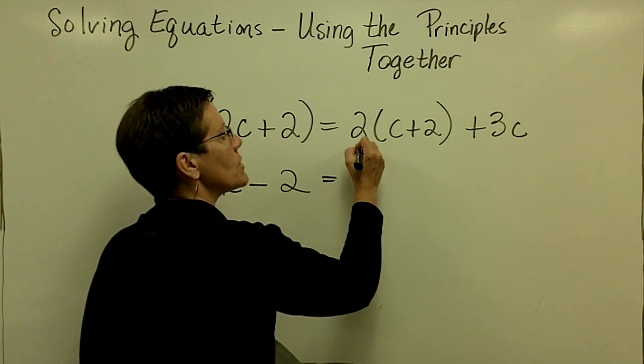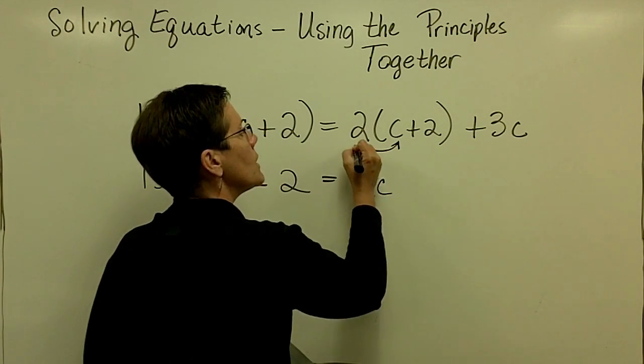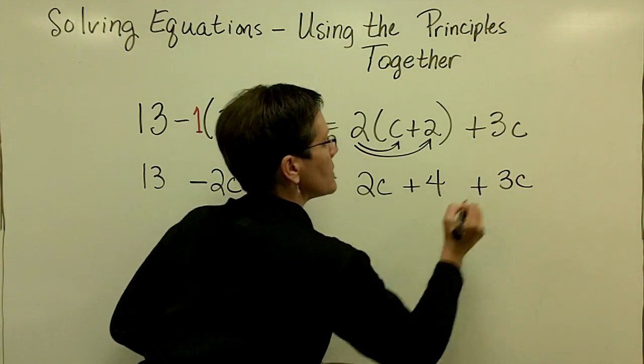On the right-hand side, let's distribute. This one's easy. Positive 2 times c is a positive 2c, and 2 times 2 is a positive 4. And bring down your 3c.